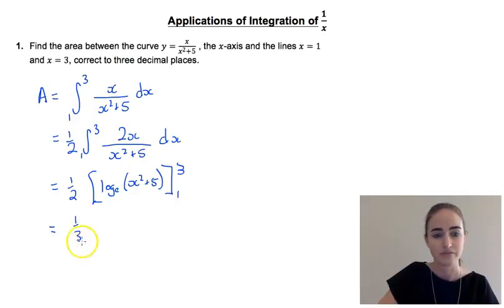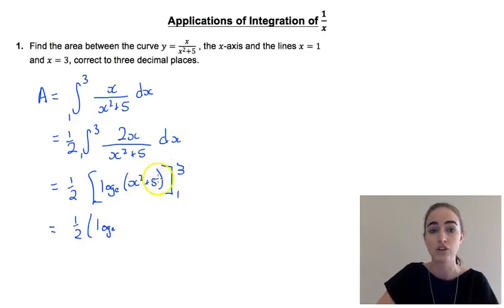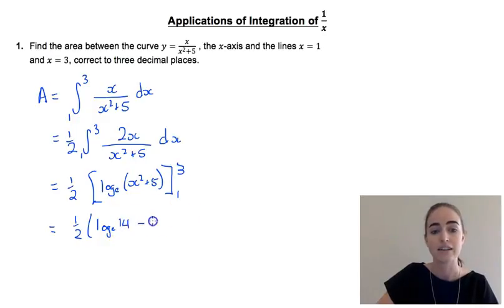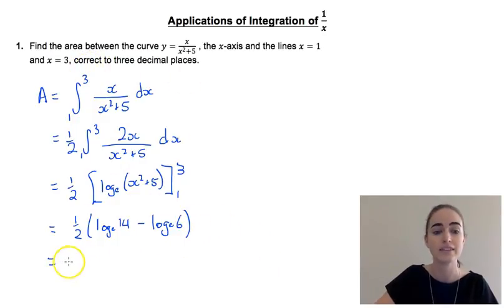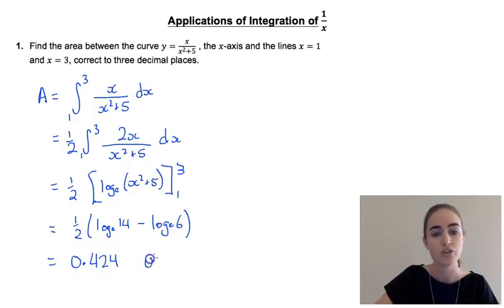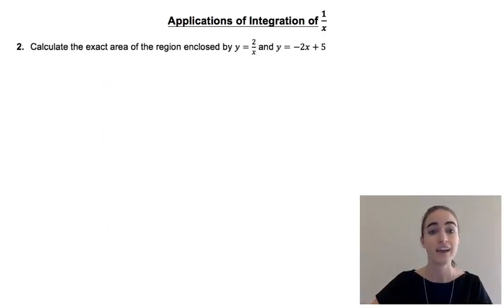So we're going to have a half outside of log to the base e. If we put 3 in here we'd have 3 squared so 9 plus 5, so log to the base e of 14 minus log to the base e of 6. If we pop that in our calculator we would end up with 0.424 units squared for the area underneath that curve.